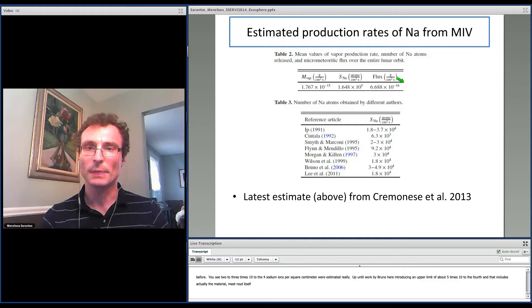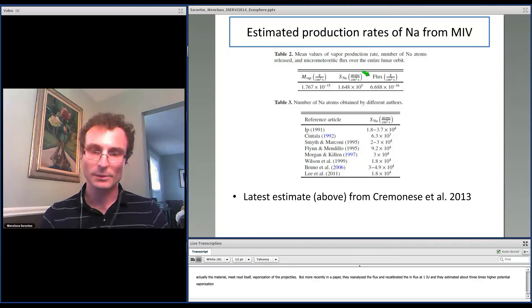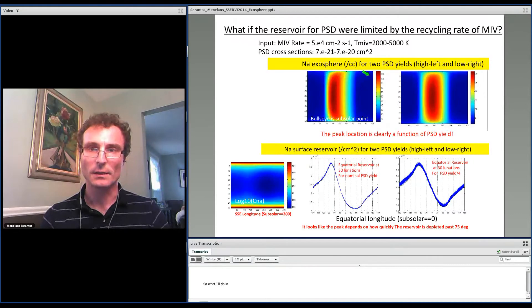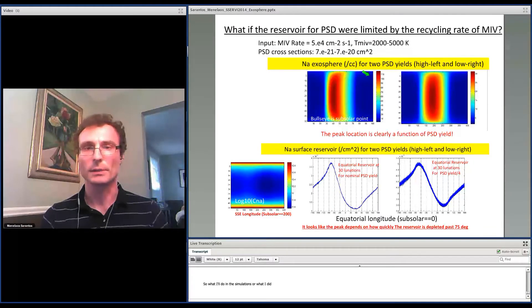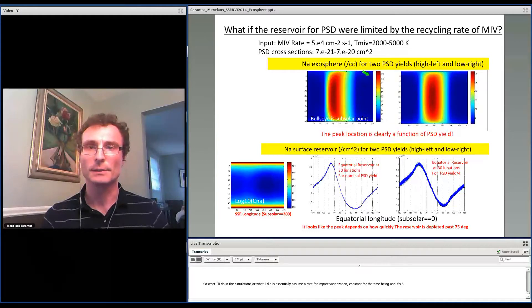But more recently in a paper by Cremonese, they reanalyzed the LDEF flux experiment and recalibrated the influx at 1 AU, and they estimated about three times higher potential vaporization rate for sodium. So what I did is essentially assume a rate for impact vaporization that's constant for the time being, 5×10⁴ per square centimeter per second.